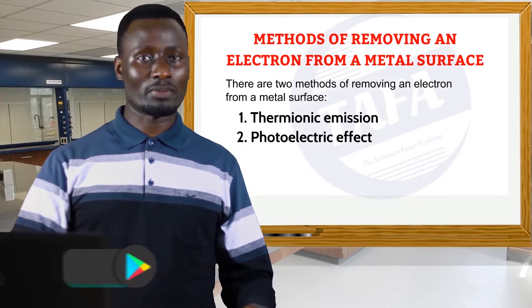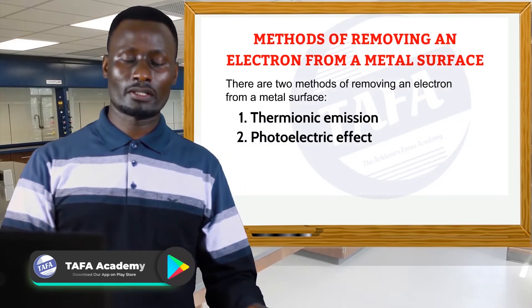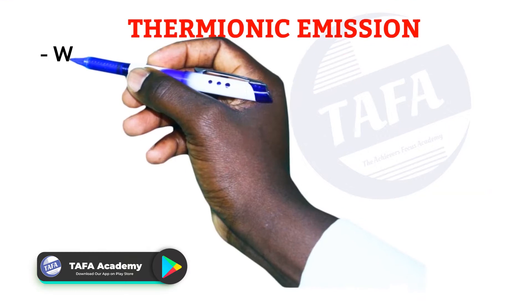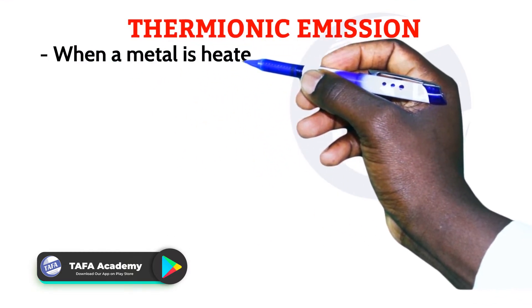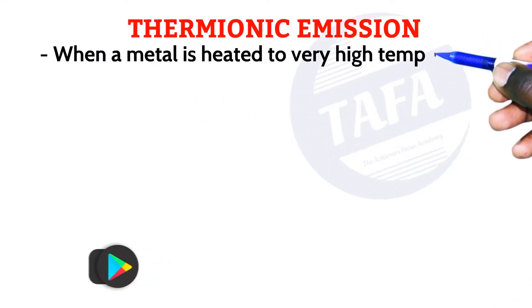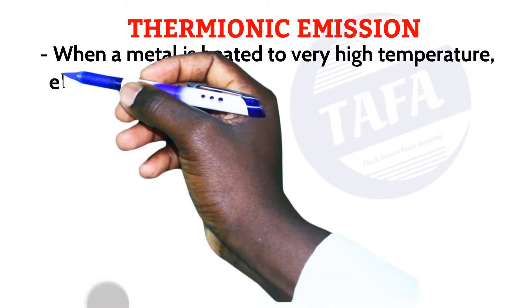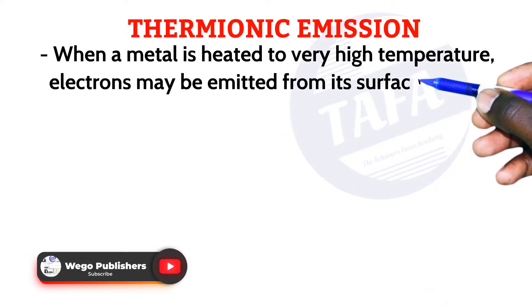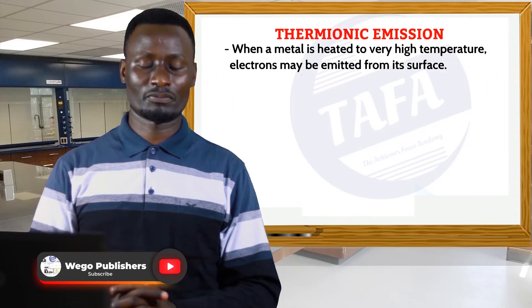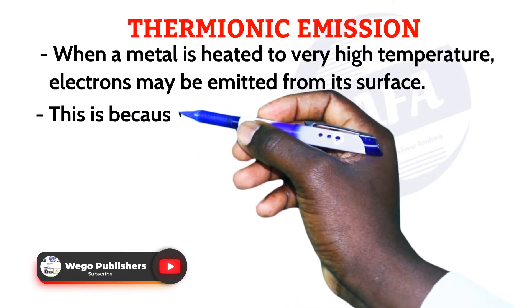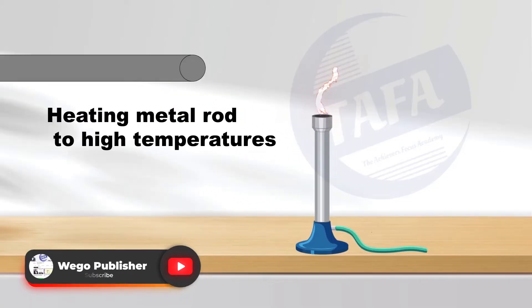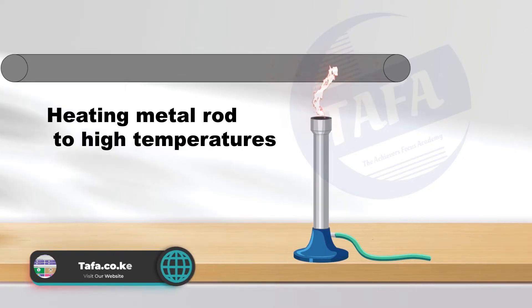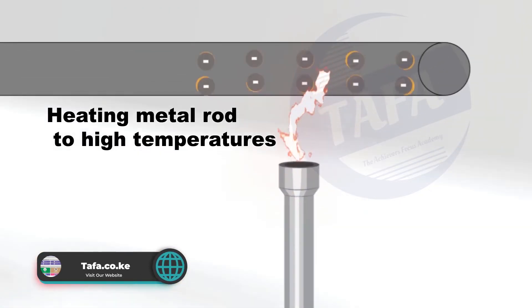We now want to start by looking at thermionic emission. When a metal is heated to very high temperatures, electrons may be emitted from its surface. This is because the electrons gain enough energy to enable them to break loose from the force of attraction of the positive nuclei.